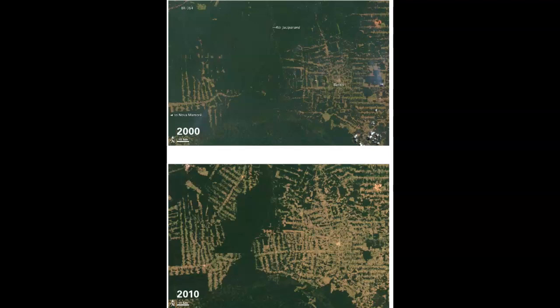Here we have satellite images comparing the same part of the Amazon rainforest in the year 2000 and 10 years later in 2010. The tan-colored patches are areas of deforestation. In 2000 there aren't that many, but in 2010 there are a lot. Rainforests are shrinking worldwide — a few thousand years ago they covered 12% of Earth's surface, but today only about 2% of Earth is covered with rainforest.